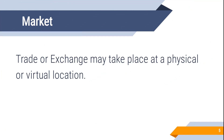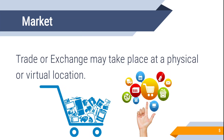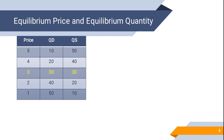A market can be a physical or virtual location. For example, we do e-commerce and online shopping — that is also a market. Now let's discuss equilibrium price and equilibrium quantity.